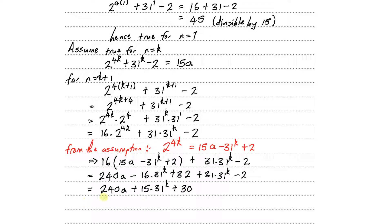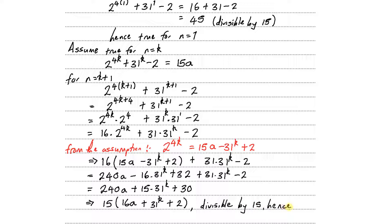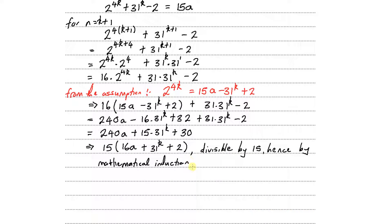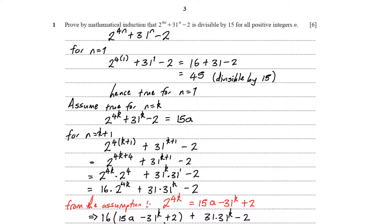What we have is divisible by 15. Factoring out 15 gives us 15(16a plus 31 to the power of k plus 2), which is exactly divisible by 15. Hence, by mathematical induction, it is true for every positive integer n. That completes question number one — let's scroll down to question number two.